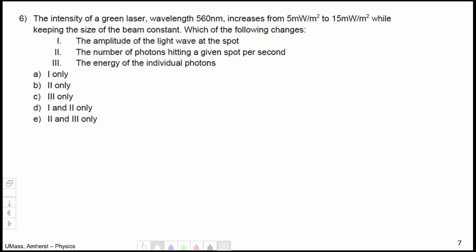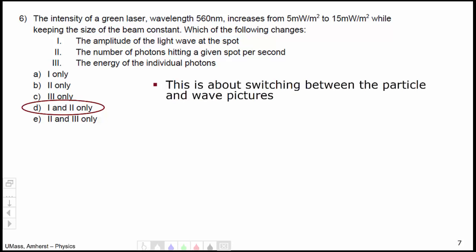Question number 6 dealt with the intensity of a green laser. The correct answer was that 1 and 2 were both true. The amplitude of the light wave at the spot got larger and the number of photons hitting the given spot got larger. This question was really about switching between the particle picture and wave picture for photons.